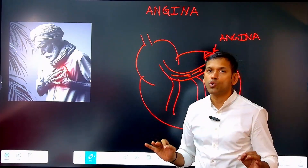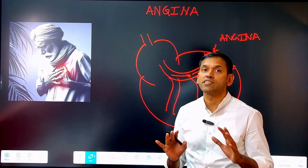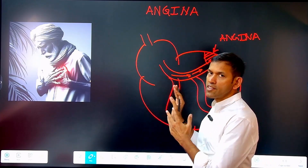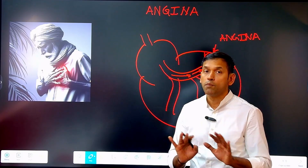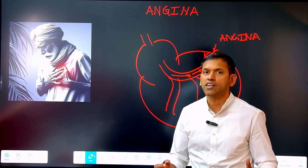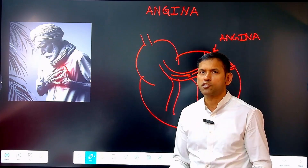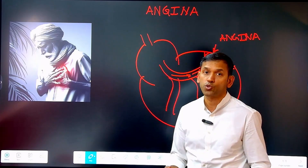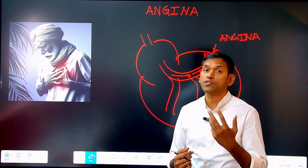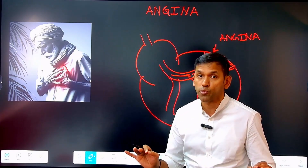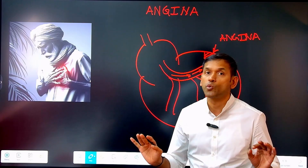Unless and until there is ischemia, angina should not be used as a term. If you find ischemia in the myocardium, the pain which comes out because of that ischemia should be termed angina. But when a patient comes to us complaining of chest pain, that chest pain could have many different reasons — cervical nerves, local tissues, ribs, costal cartilage, skin, esophagus, or lungs. There are many reasons which could lead to chest pain not related to the heart, and hence every chest pain is not equal to angina.